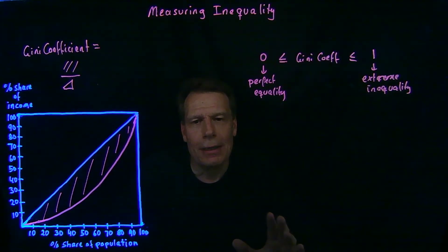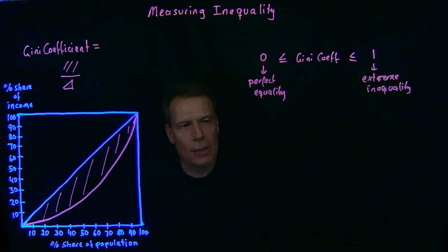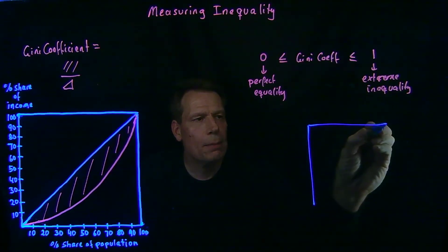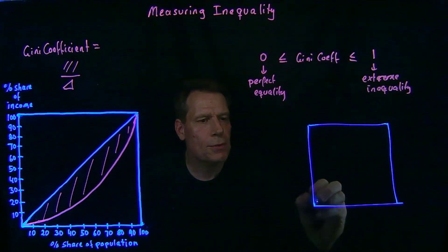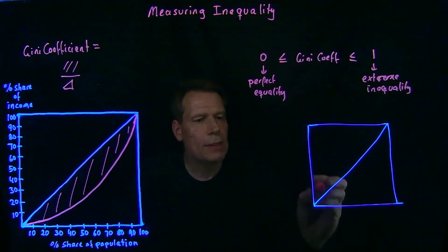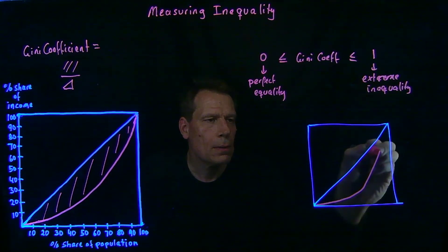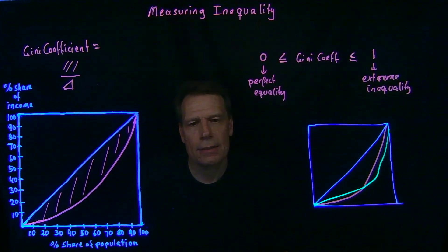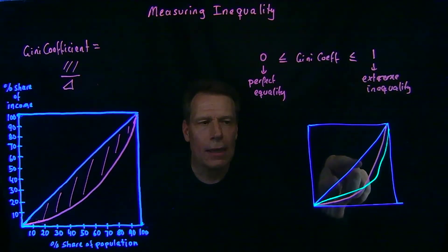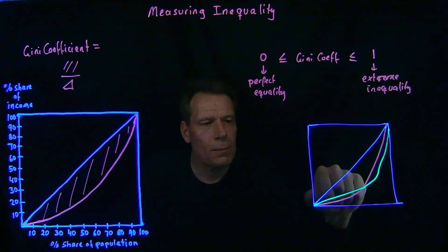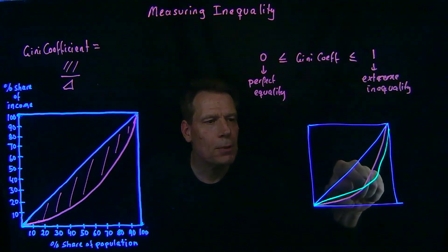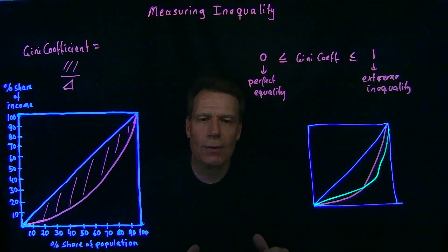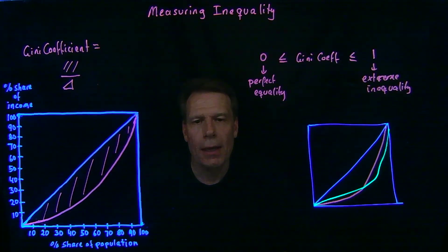Before I let you go, I'd like you to think about one more thing before you take the quiz. Suppose I give you two different income distributions on the same graph. Here's our diagonal of complete equality. One income distribution looks like this, and another looks like this. The shaded area is roughly equal for these two distributions — we get additional area for the magenta curve down here, but additional area for the green curve up here. If you were a Rawlsian, which income distribution would you prefer? Give that some thought, take the quiz, and I'll see you in class.